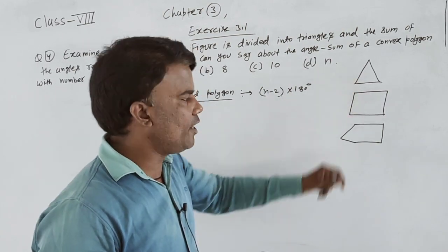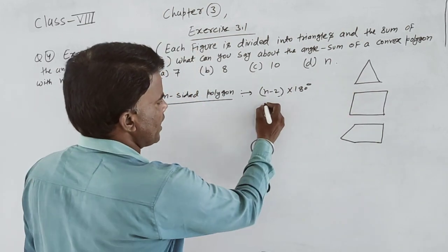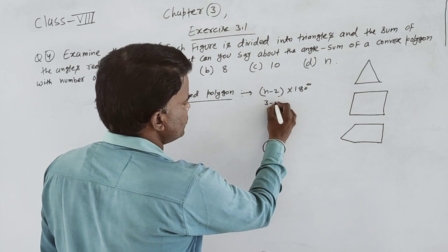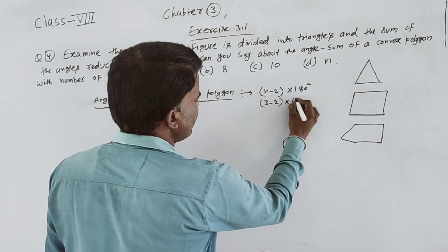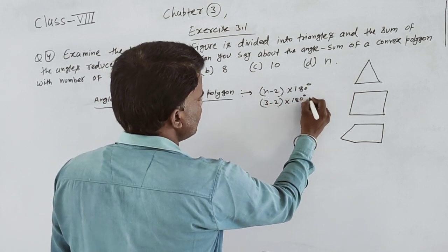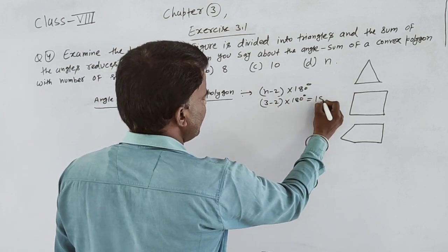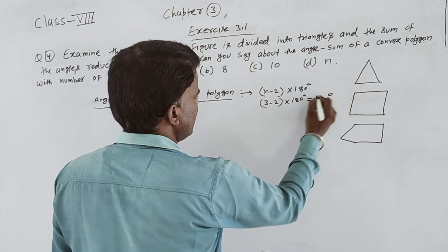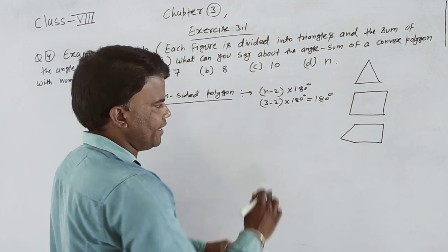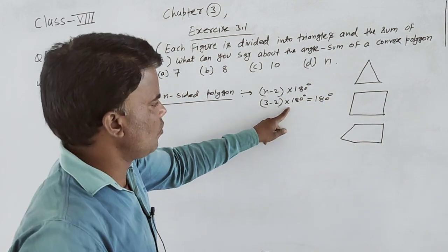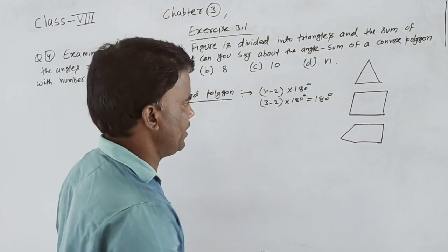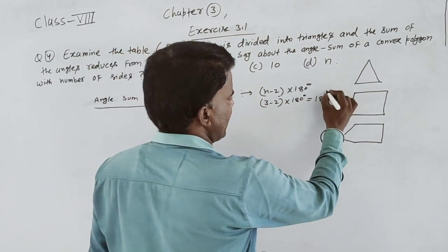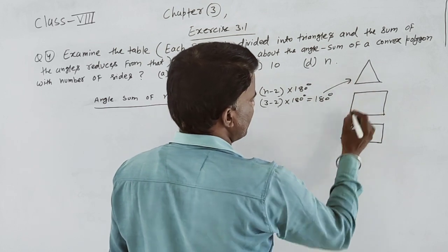Triangle के अंदर three sides होती हैं, तो यह हो जाएगा 3 minus 2, multiply 180 — it means 180 degrees. 3 में से 2 minus करेंगे तो 1, और 1 को 180 से multiply करेंगे तो 180. यह triangle के लिए हो जाएगा।